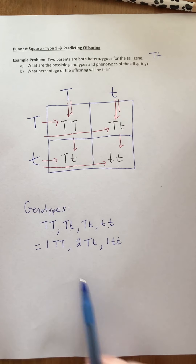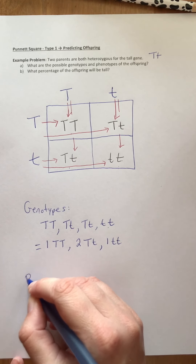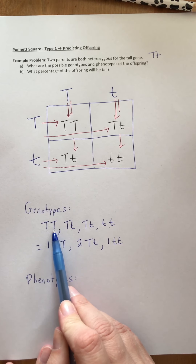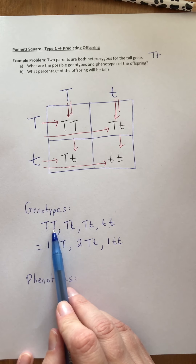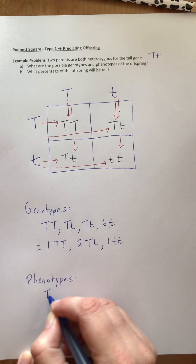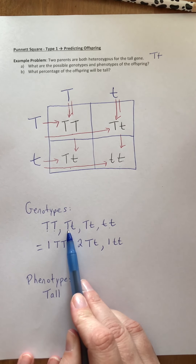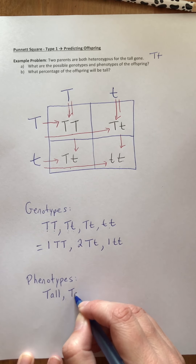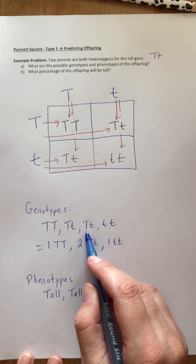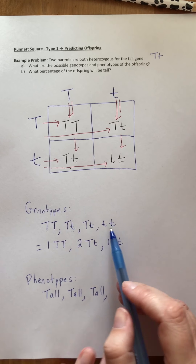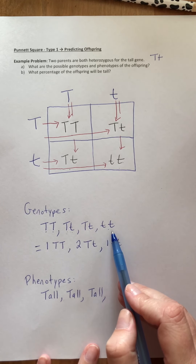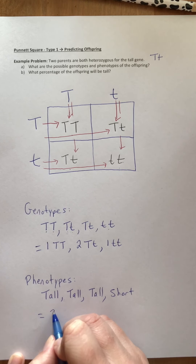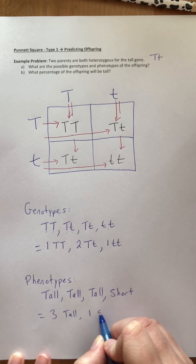The last step is to take our genotypes and convert them to phenotypes — what the offspring would actually look like. The one that is capital T capital T has both dominant alleles, so they show the dominant trait, which is tall. The capital T lowercase t offspring also have the dominant allele, so they are also tall. The fourth one with both lowercase t's has both alleles for short, so they are going to be short. Simplifying: we have three offspring that are tall and one that is short.